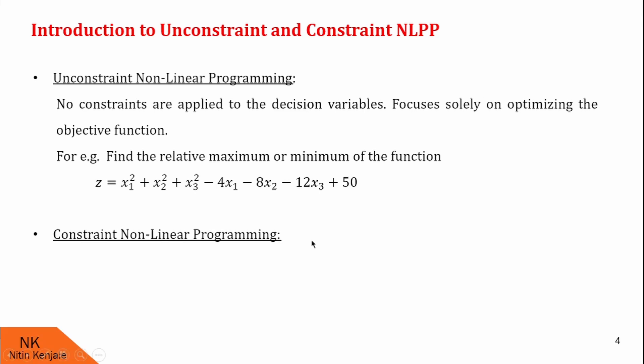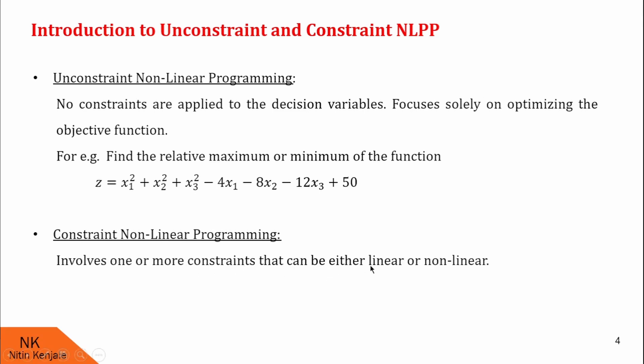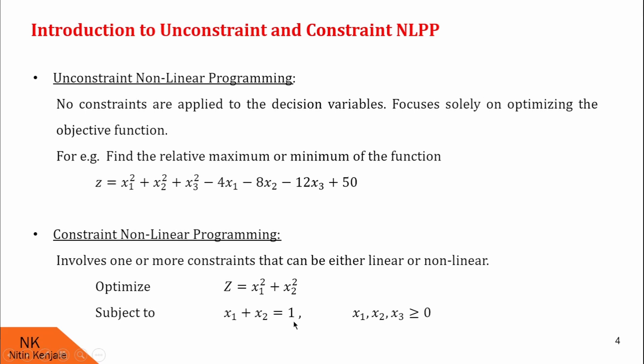Whereas in constrained NLPP, we have one or more constraints that can be either linear or non-linear. For example, optimize z = x1² + x2², subject to x1 + x2 = 1, given x1, x2, x3 ≥ 0. This is a constrained NLPP because it has a constraint. To summarize: if the NLPP has constraints, it is constrained NLPP; if it has only an objective function without any constraint, it is unconstrained NLPP. In this video, we focus only on unconstrained NLPPs; constrained NLPPs will be covered in the next video.